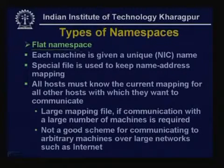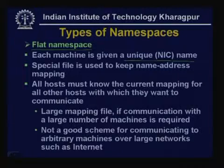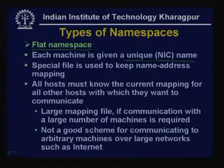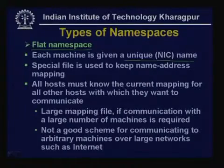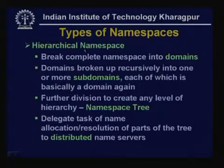In a flat name space, each machine is given a unique name by the NIC (Network Information Center) and a special file maps names to addresses. All hosts must know current mappings, requiring a huge mapping file for large networks like the internet — making flat name space impractical for large-scale use.